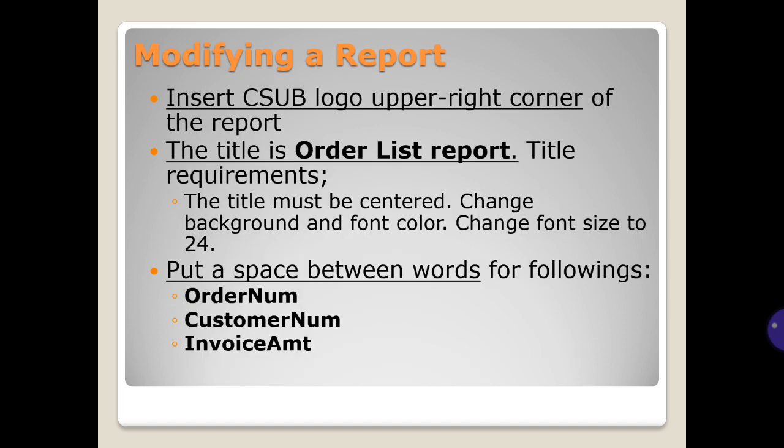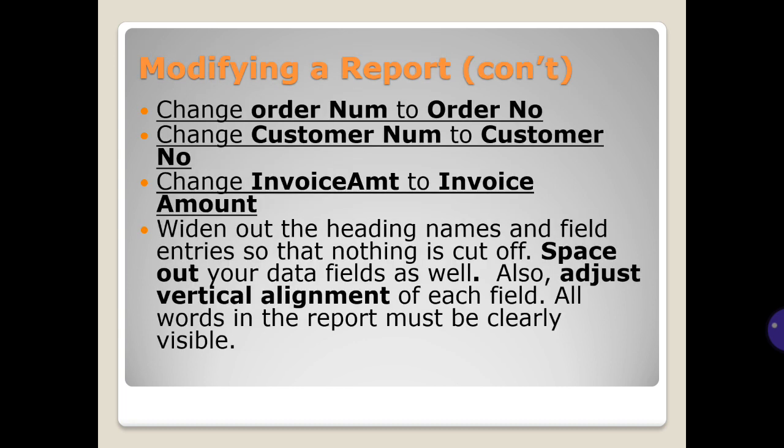Modifying a report: insert the CSUB logo in the upper right corner of the report. The title is 'Order List Report'. The title must be centered, colored red, with background and font color changed, and font size changed to 24. Put a space between words for order number, customer number, and invoice amount. Change 'order number' to 'order and all', change 'customer number' to 'customer number', and change 'invoice amount' to 'invoice amount'.